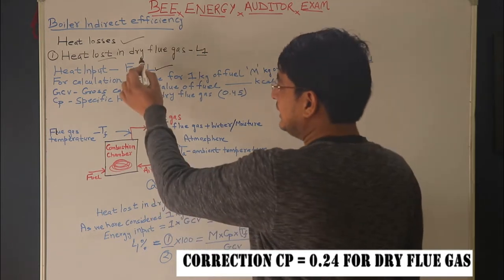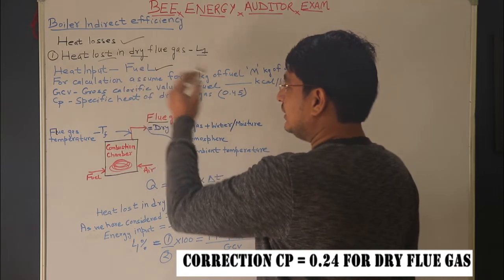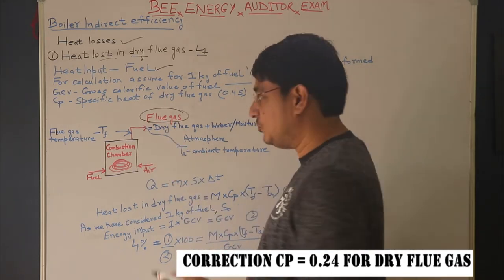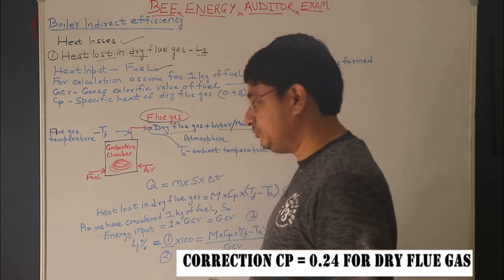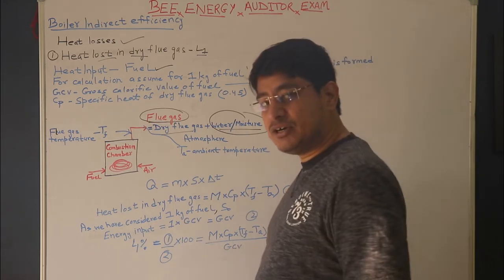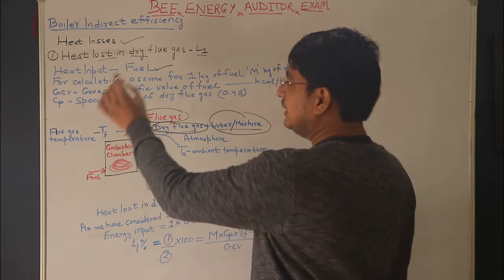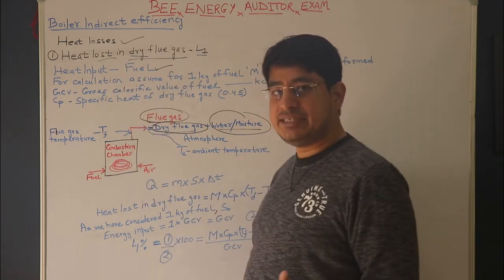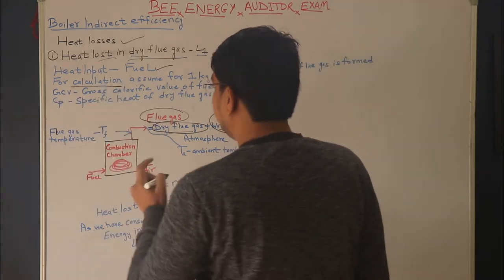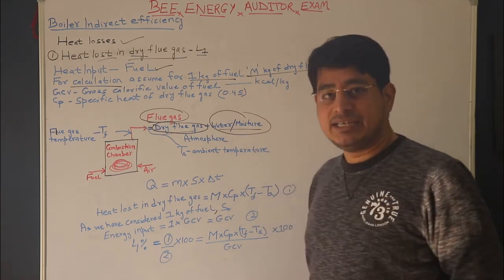For calculation of heat loss in dry flue gas, I consider only the dry part of the flue gas. The flue gas can be broken down into dry flue gas plus water/moisture. The moisture will be dealt with separately. Here I am calculating the loss linked with dry flue gas only. I have assumed 1 kg of fuel, and that m kg of dry flue gas is formed per kg of fuel.